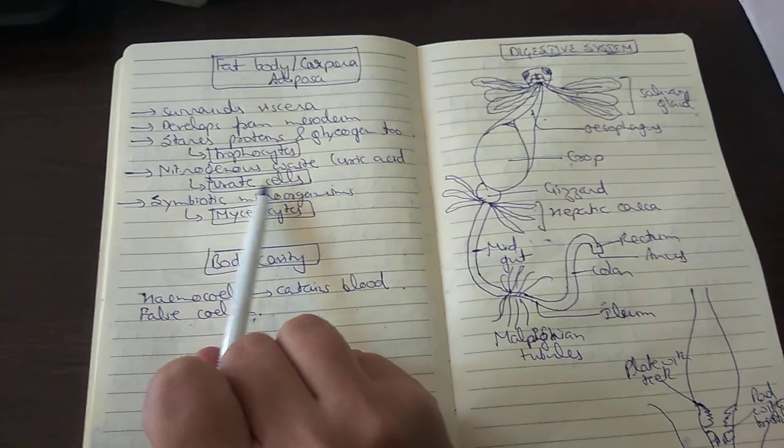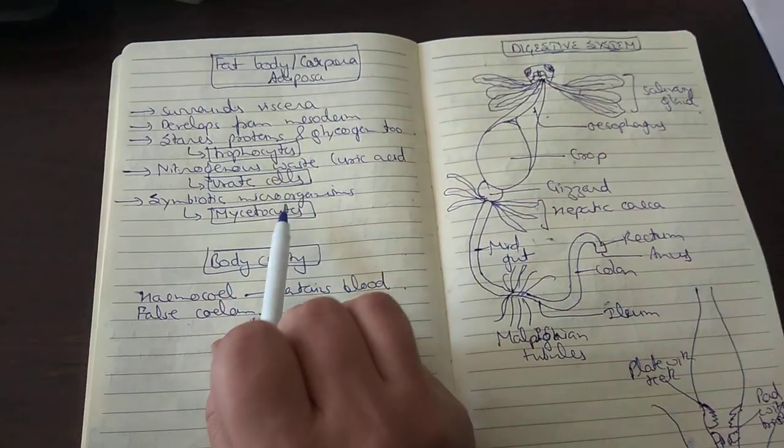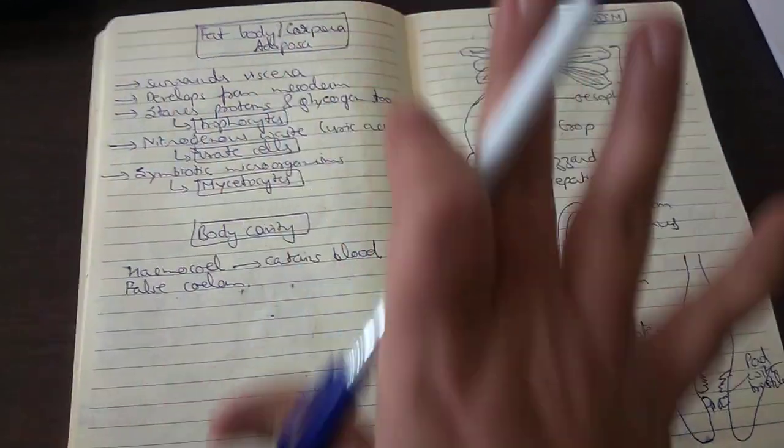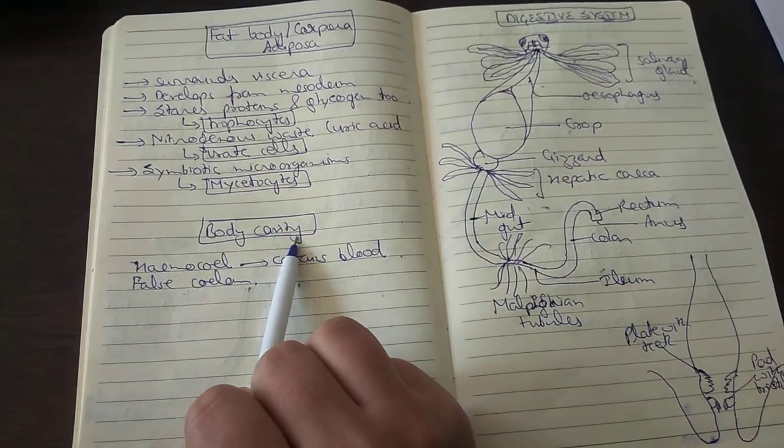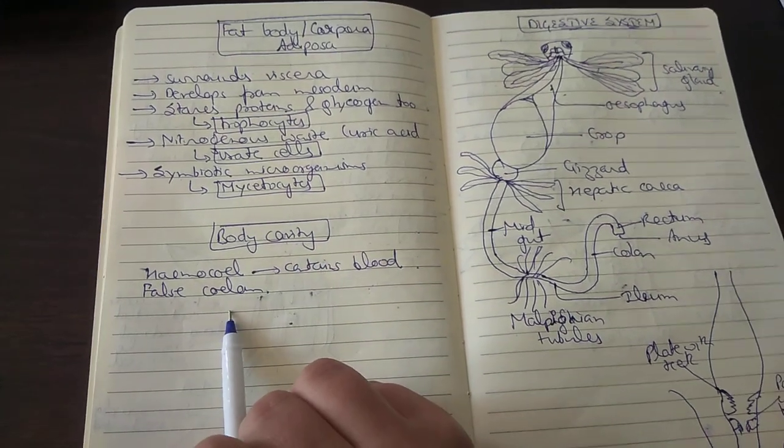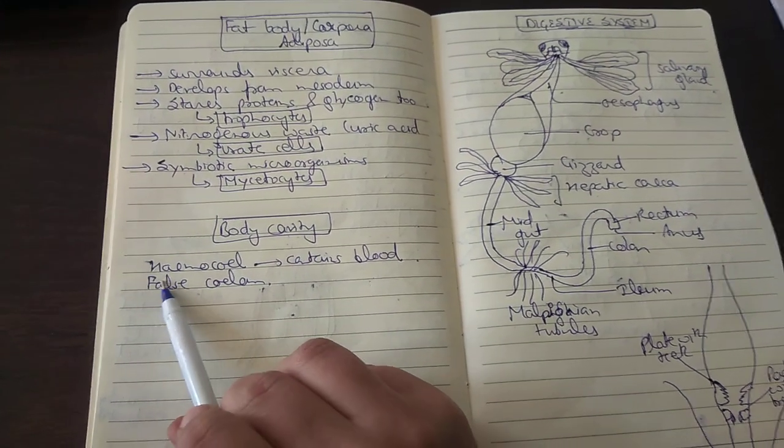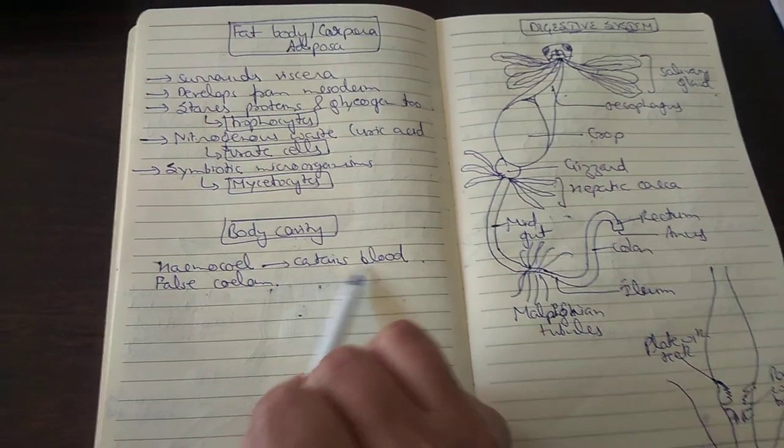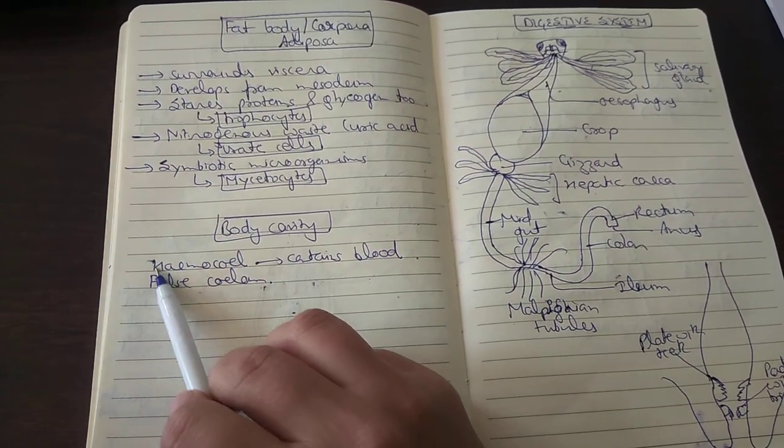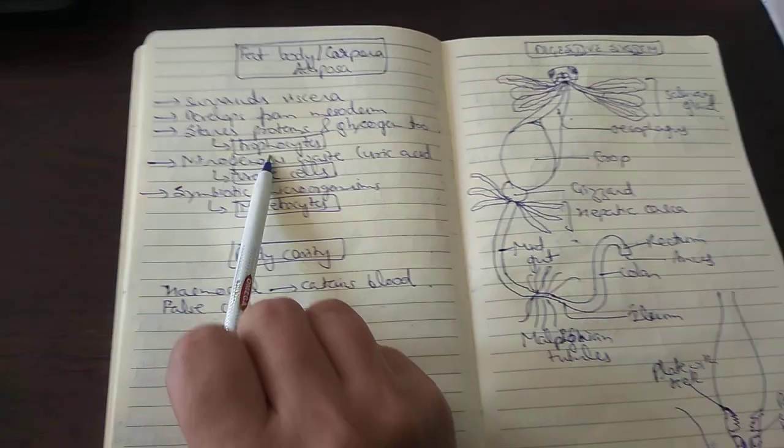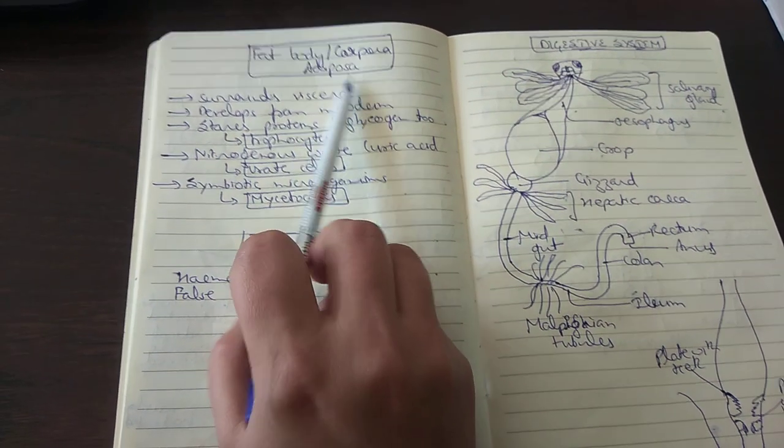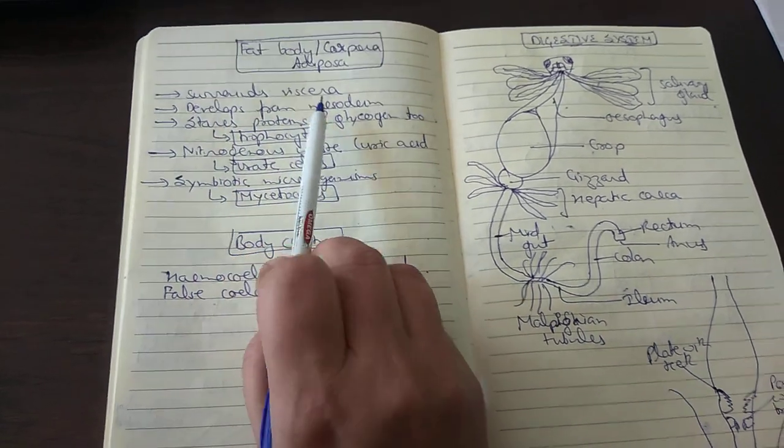Then comes the body fat body and corpora adiposa. In cockroaches, as in all insects, the viscera is surrounded by a cavity called the body cavity. Since this cavity is not lined by mesodermal epithelium, it is a false coelom. This coelom contains blood, so the body cavity is referred to as hemocoel. The hemocoel has the fat body or corpora adiposa which surrounds the viscera.